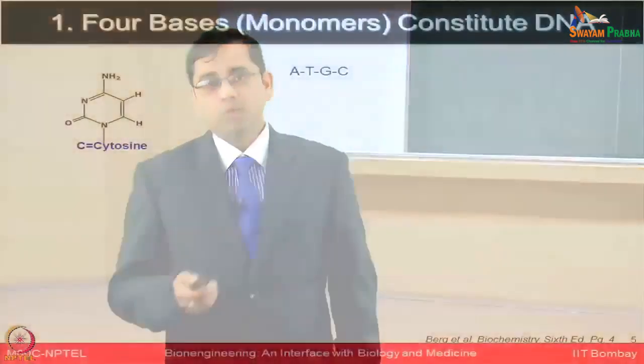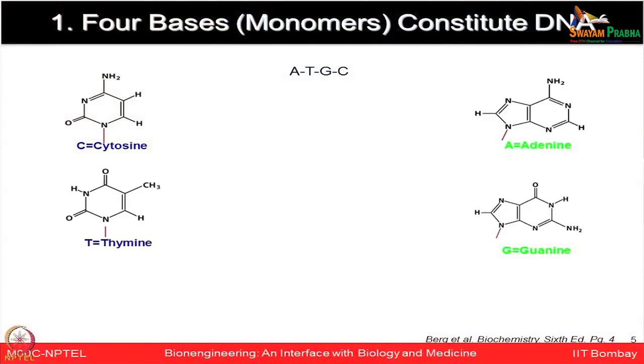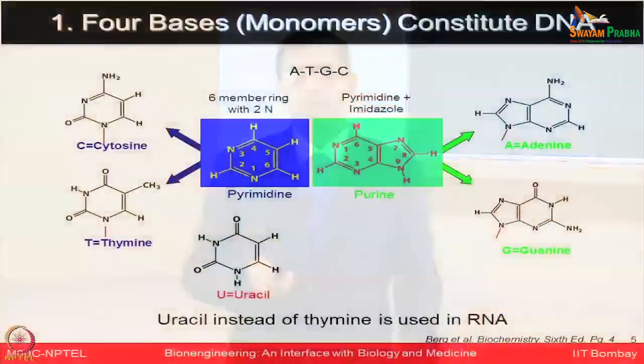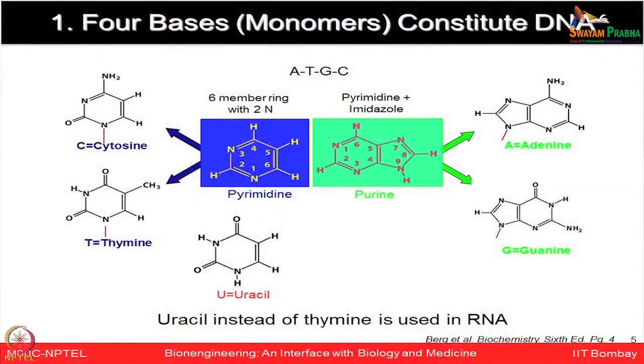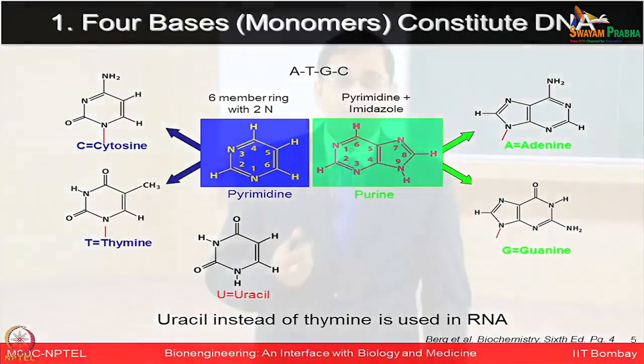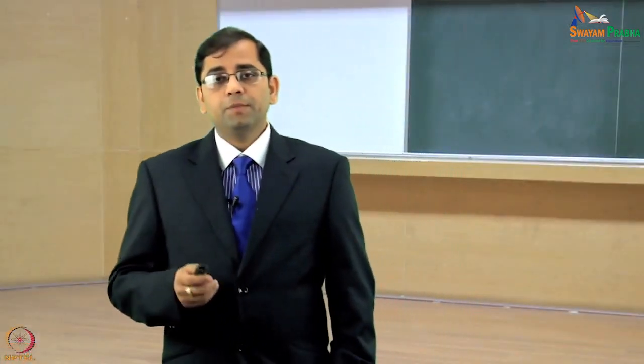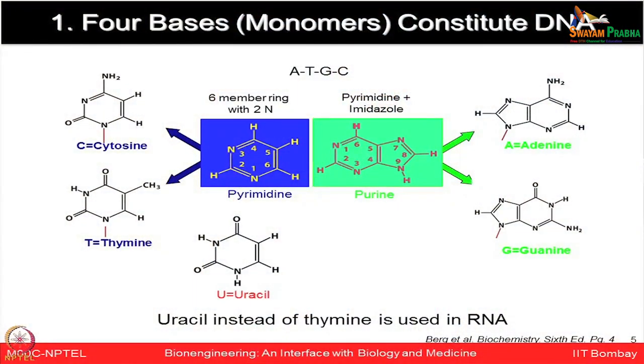There are 4 bases — the monomers which constitute DNA. These are cytosine, thymine, adenine, and guanine (ATGC). Cytosine and thymine are 6-membered rings with 2 nitrogen atoms having the pyrimidine ring structure, whereas adenine and guanine share the purine ring structure, which is pyrimidine plus an additional imidazole ring. Uracil is unique because it is found replacing thymine in the case of RNA.